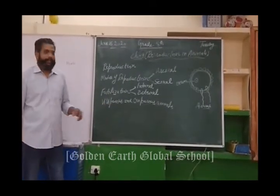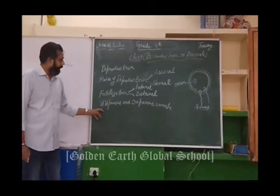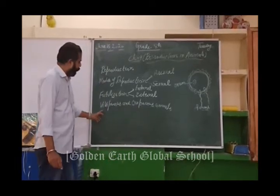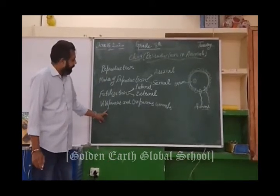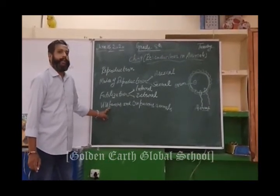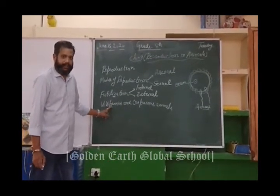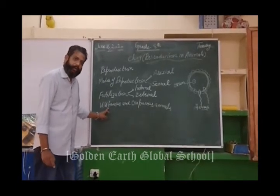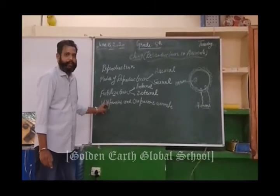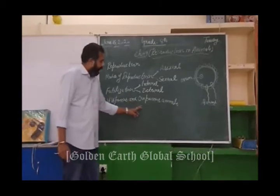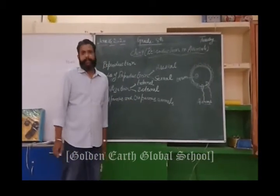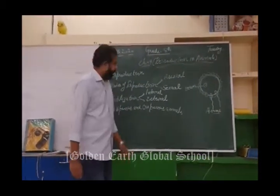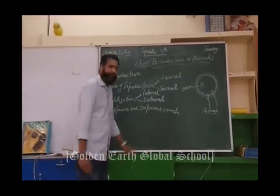The next topic is viviparous and oviparous animals. Viviparous animals are those animals which give birth to their young ones, like cows and humans. Oviparous animals are those animals which lay eggs in the process of reproduction.